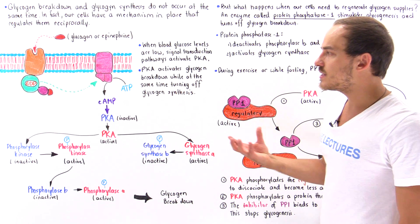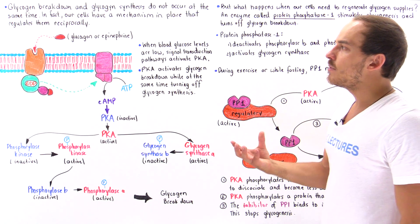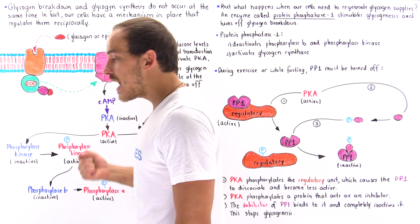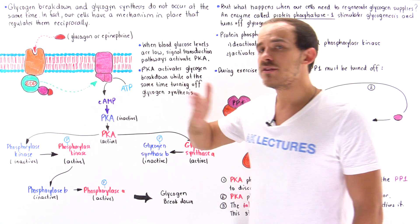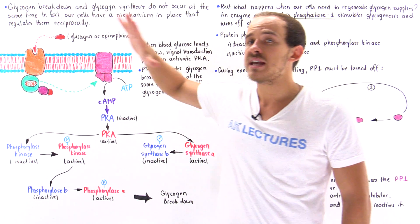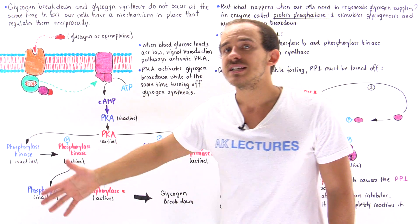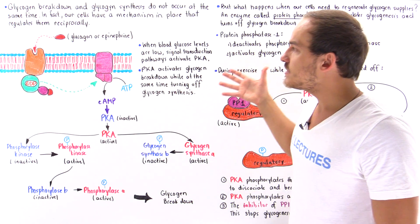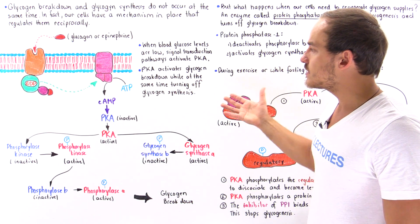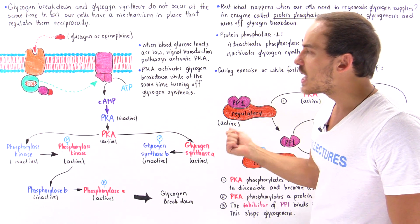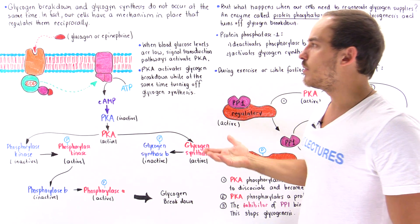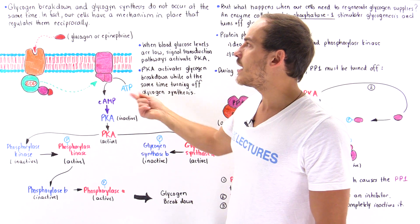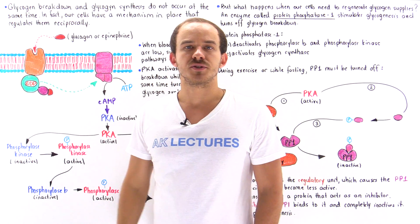In summary, when glycogen metabolism takes place inside our cells, the two processes are kept separate — when one takes place, the other does not. This signal transduction pathway allows liver cells, skeletal muscle cells, and other cells to carry out this reciprocal mechanism of glycogen metabolism.